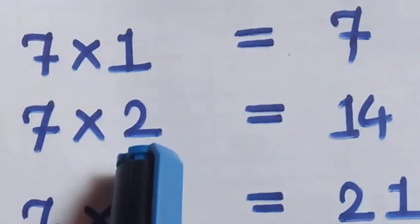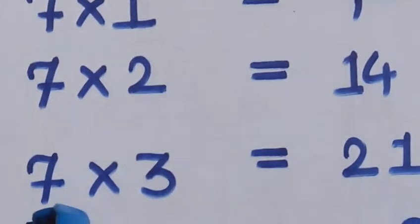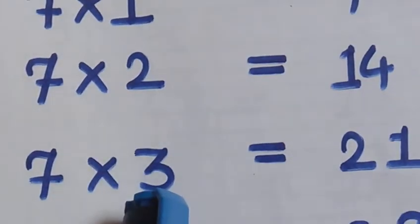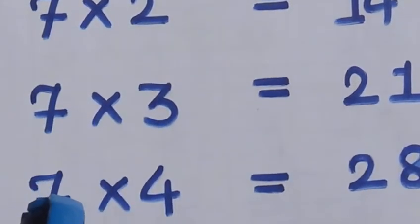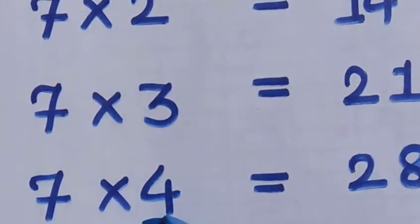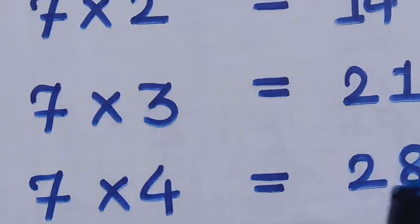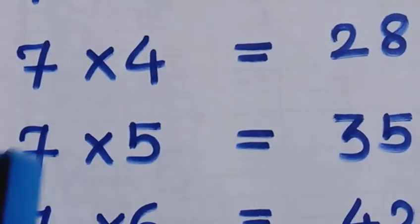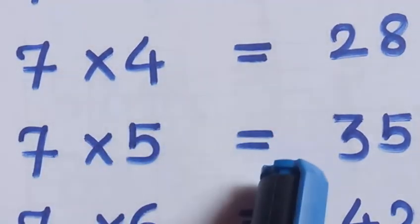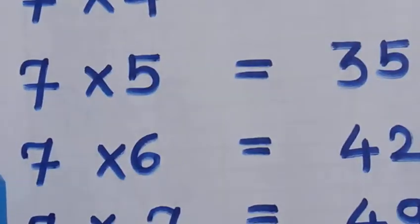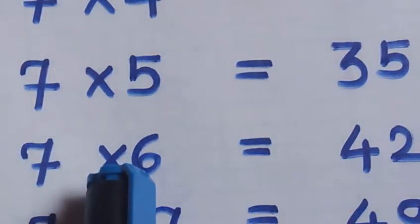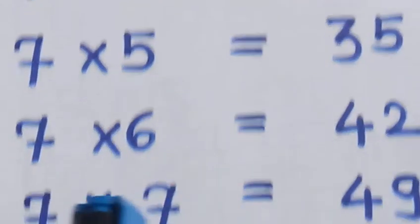7 2's are... 7 3's are... 7 4's are 28, good. 7 5's are 35, 7 6's are...